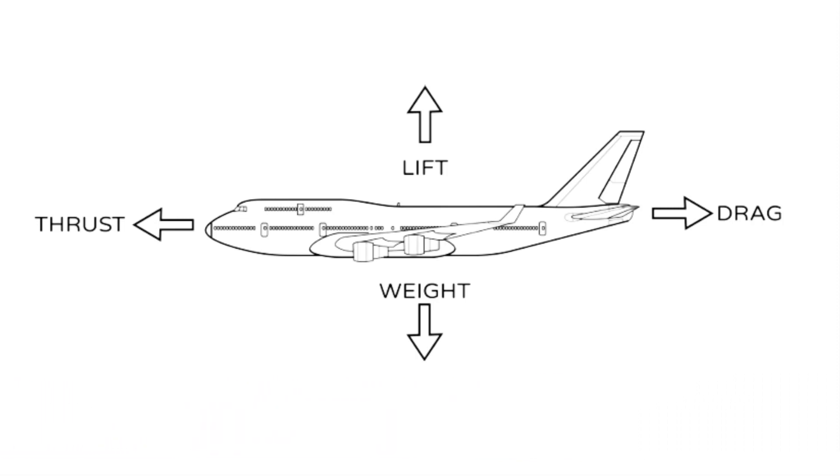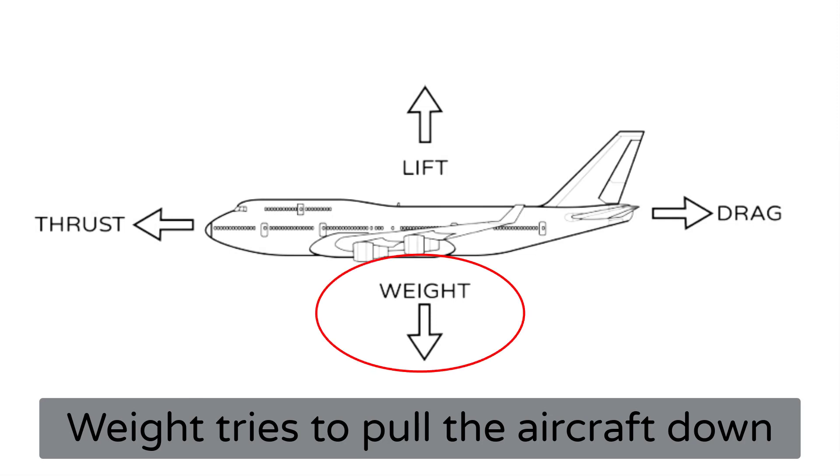Weight is the force resulting from gravity acting on the mass of the flying machine. It acts vertically downward, toward the center of the Earth. This means that this force directly opposes lift.